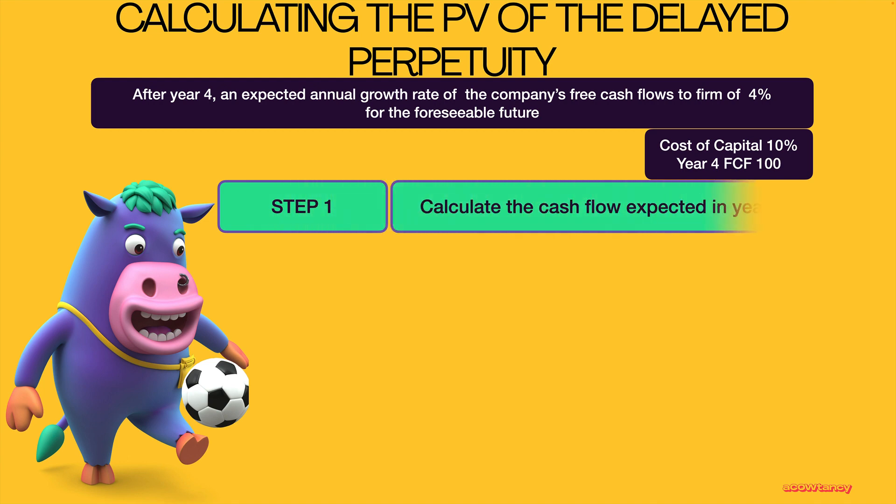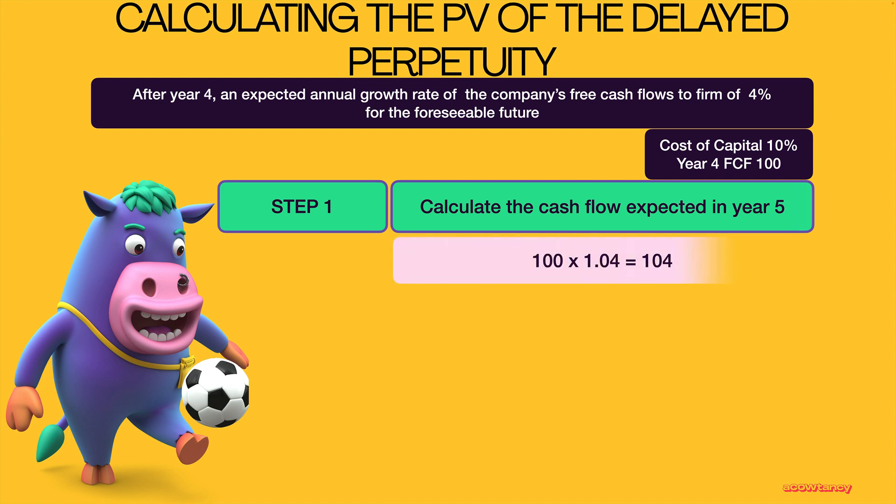Step one: calculate the cash flow expected in year five, which is easy. You just take year four's 100 and increase it by the growth rate, which in this case is 4%, to give you 104.